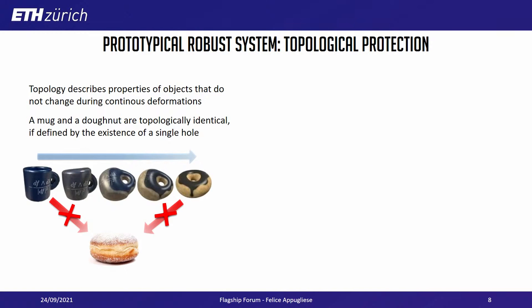What is a prototypical robust system? If we take a topologically protected system, this is considered a robust system. Topology is basically the branch of mathematics studying how objects do not change during continuous deformation. Topologically speaking, for example, a mug of coffee can be deformed into a donut without changing its property of having just one hole — it cannot become a berliner without cutting.